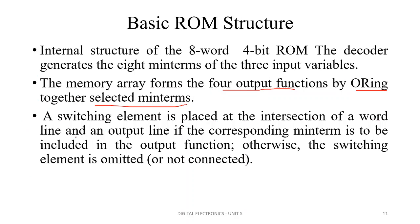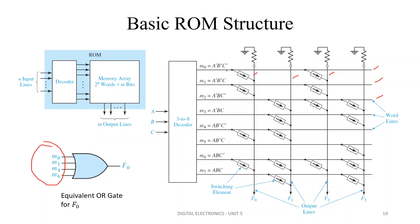A switching element is placed at the intersection of a word line and an output line if the corresponding minterm is to be included in the output function; otherwise the switching element is omitted. The switching element here is a fuse. This fuse provides a connection to the output. If the switch is ON, that particular minterm M0 will be taken as an output. If it is not present, it is not considered at the output.